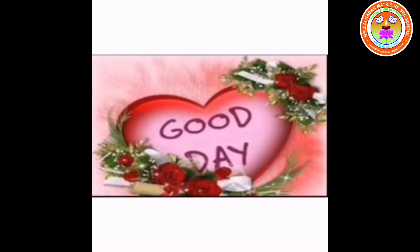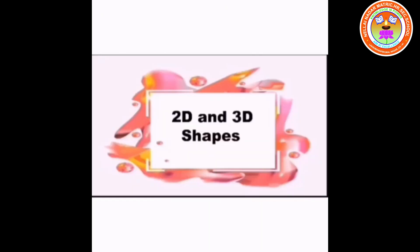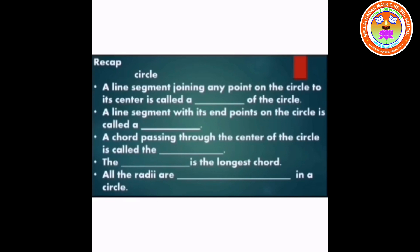Dear children, in the previous class we have learned 2D and 3D shapes and circle. Before going to the next topic, let me recap. 2D means 2 dimensional shapes. 3D means 3 dimensional shapes. We have seen the properties of circle as well.